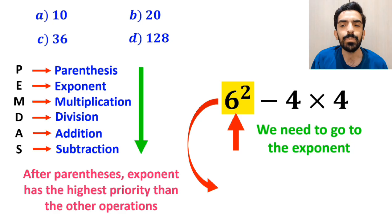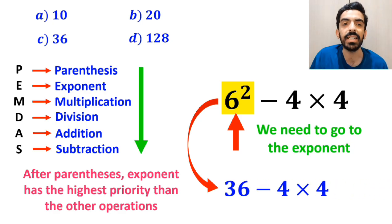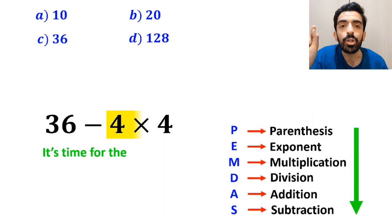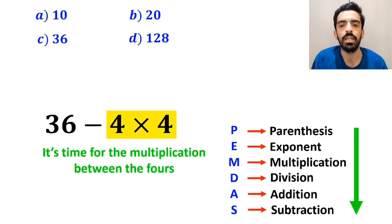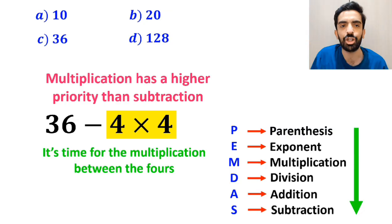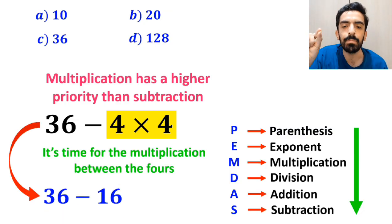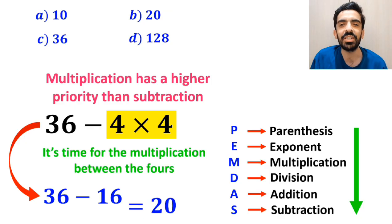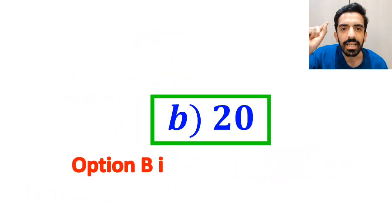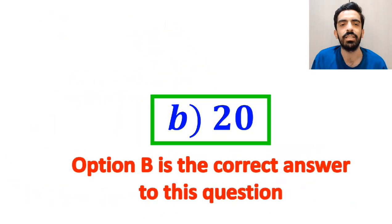So the expression simplifies to 36 minus 4 multiplied by 4. In the final step, we perform the multiplication between the two 4s, because multiplication has a higher priority than subtraction. This gives us 36 minus 16, which ultimately gives us the answer 20. Therefore, option B is the correct answer.